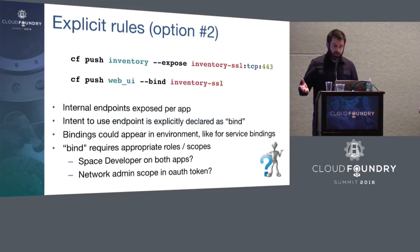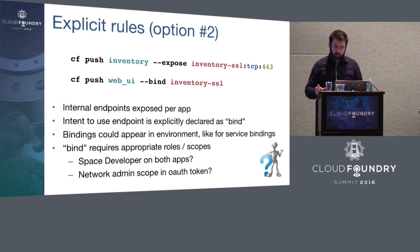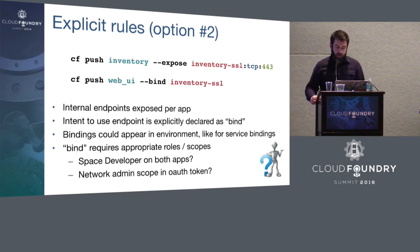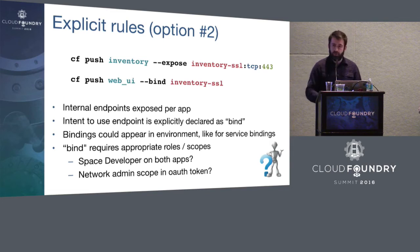Another iteration might be something a little more self-service. When I push an app, perhaps I can expose a named endpoint — I can say this inventory app is available on port 443 over TCP, and I'm giving it this name. Then when I push the web UI app that consumes that inventory backend, I say bind it to the inventory. That would perhaps be a nicer user experience and make it simpler to do microservices with CF push. We're kind of kicking these ideas around and interested in people's feedback about what they might want to use.